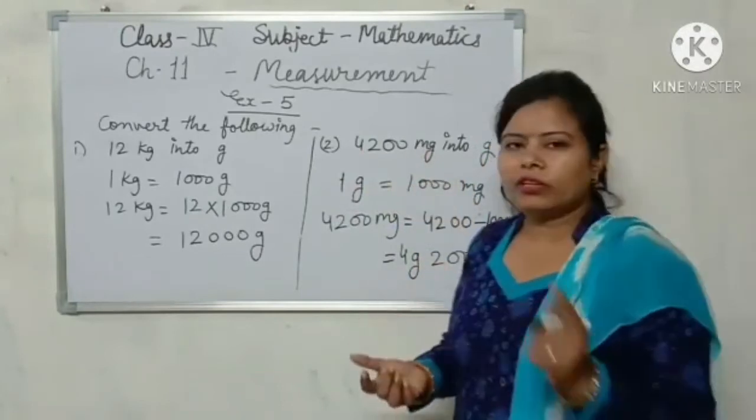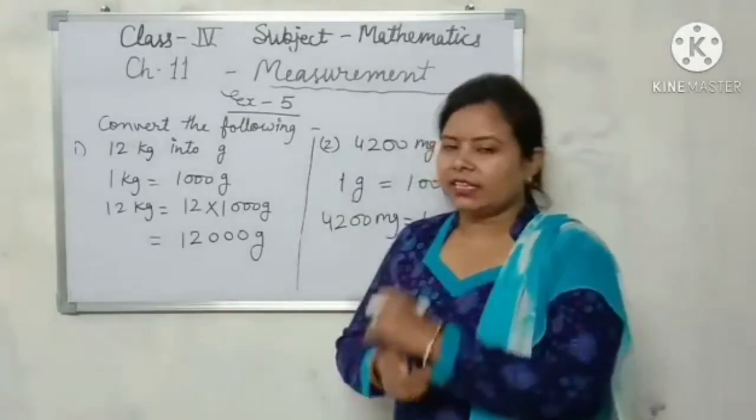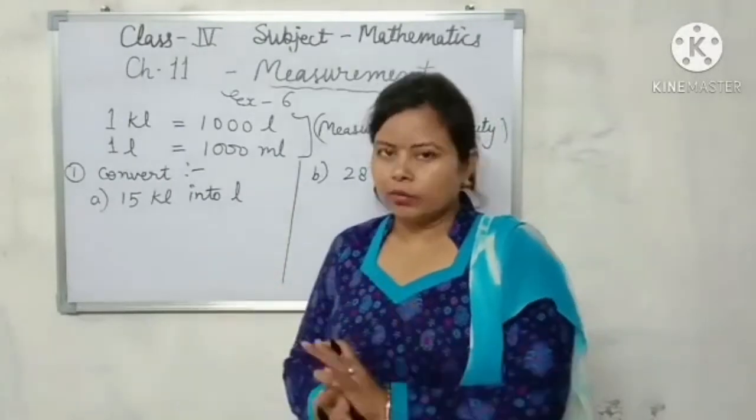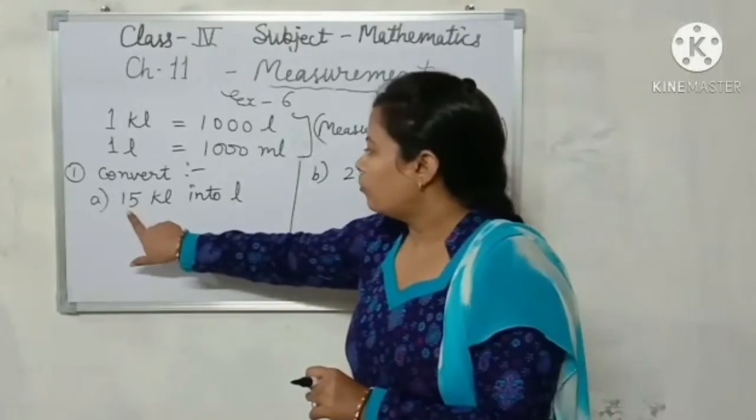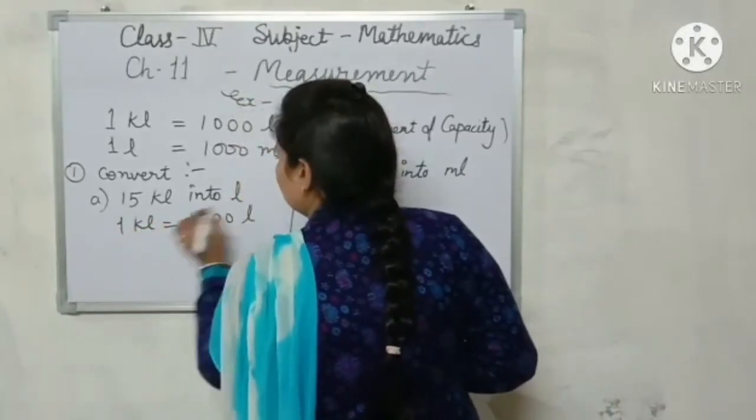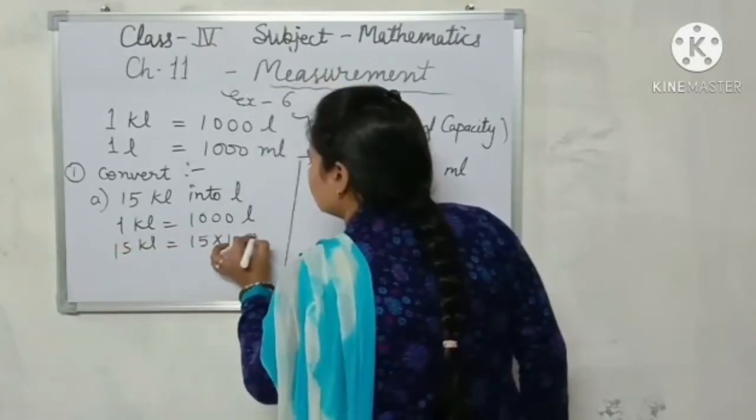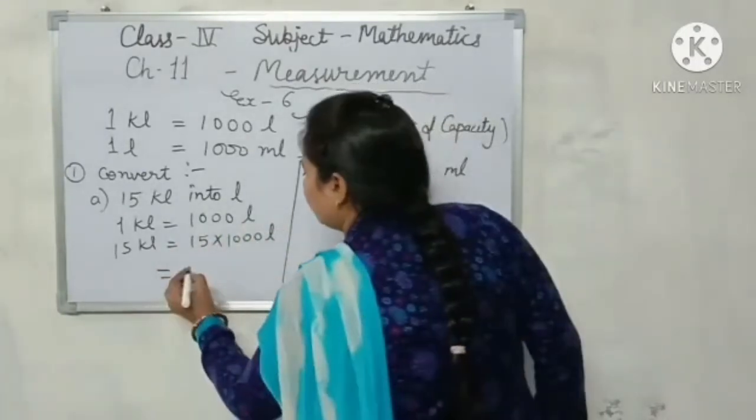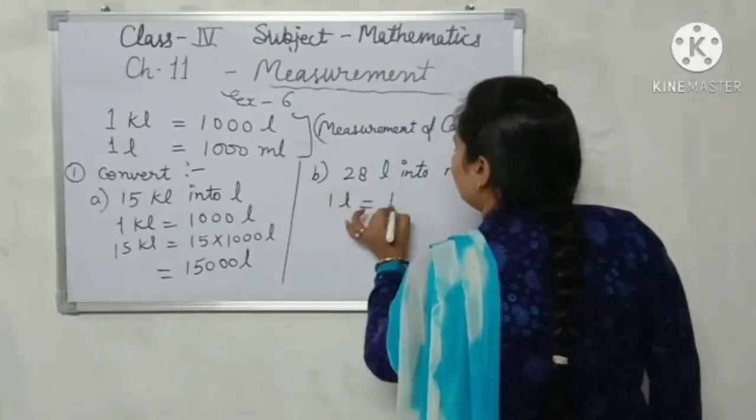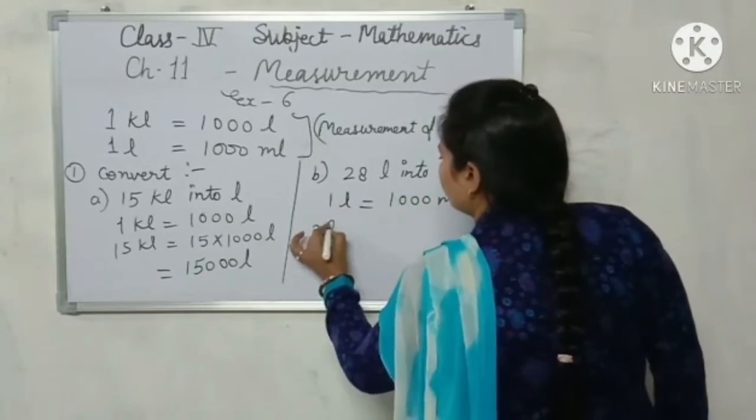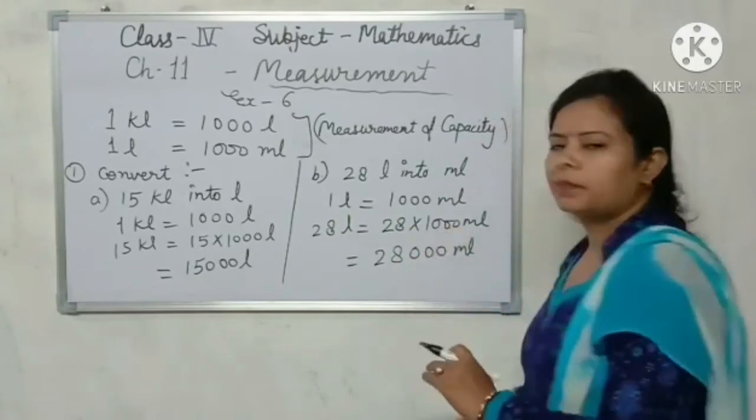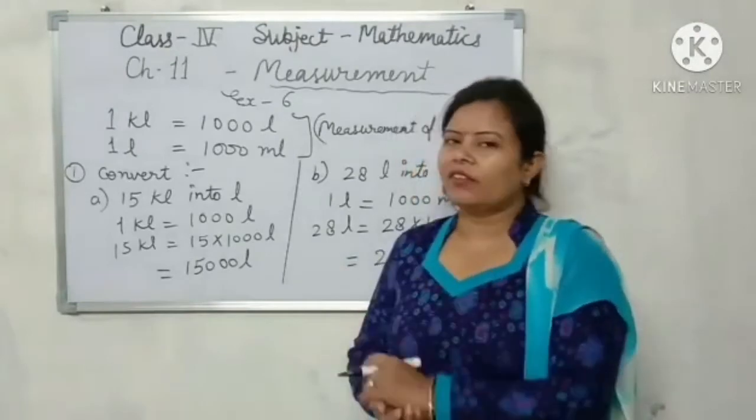Now Exercise 6, Measurement of Capacity. 1 kiloliter equals 1000 liters and 1 liter equals 1000 milliliters. Do Exercise 6. First question is 15 kiloliters into liters. 1 kiloliter equals 1000 liters, so 15 kiloliters equals 15 into 1000 liters. So the answer is 15,000 liters. Now question B: 1 liter equals 1000 milliliters, so 28 liters equals 28 into 1000 milliliters. So the answer is 28,000 milliliters.